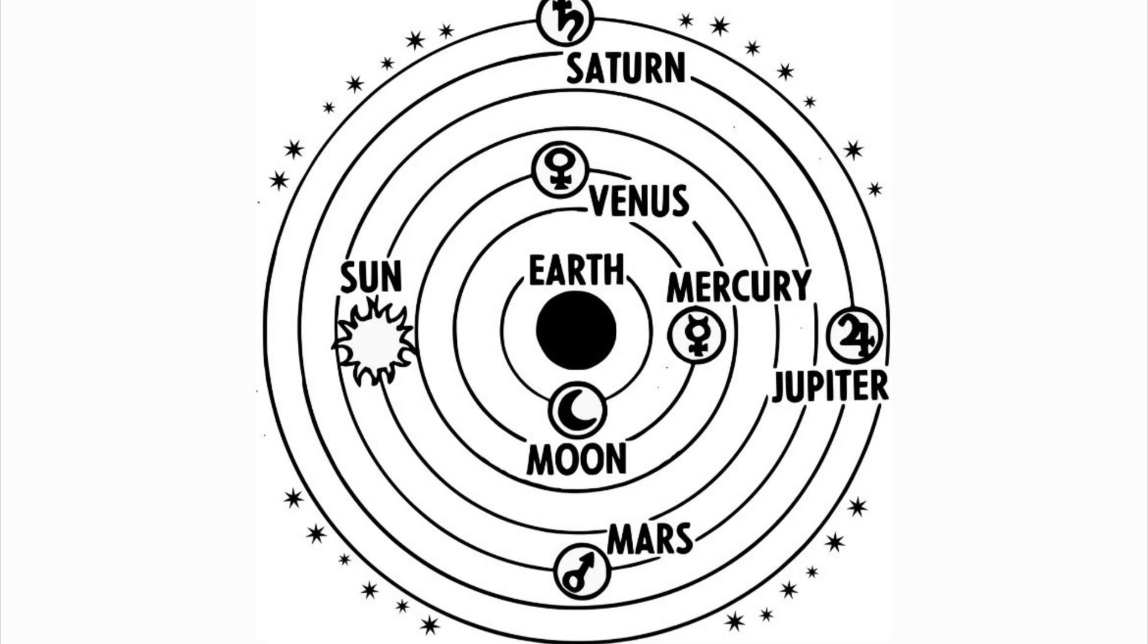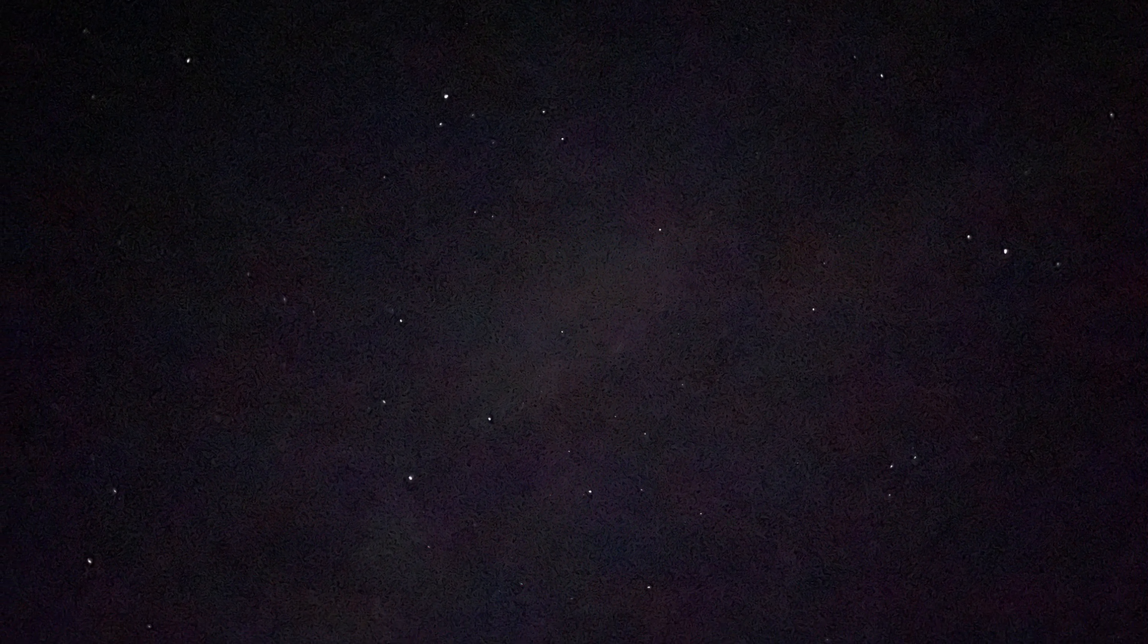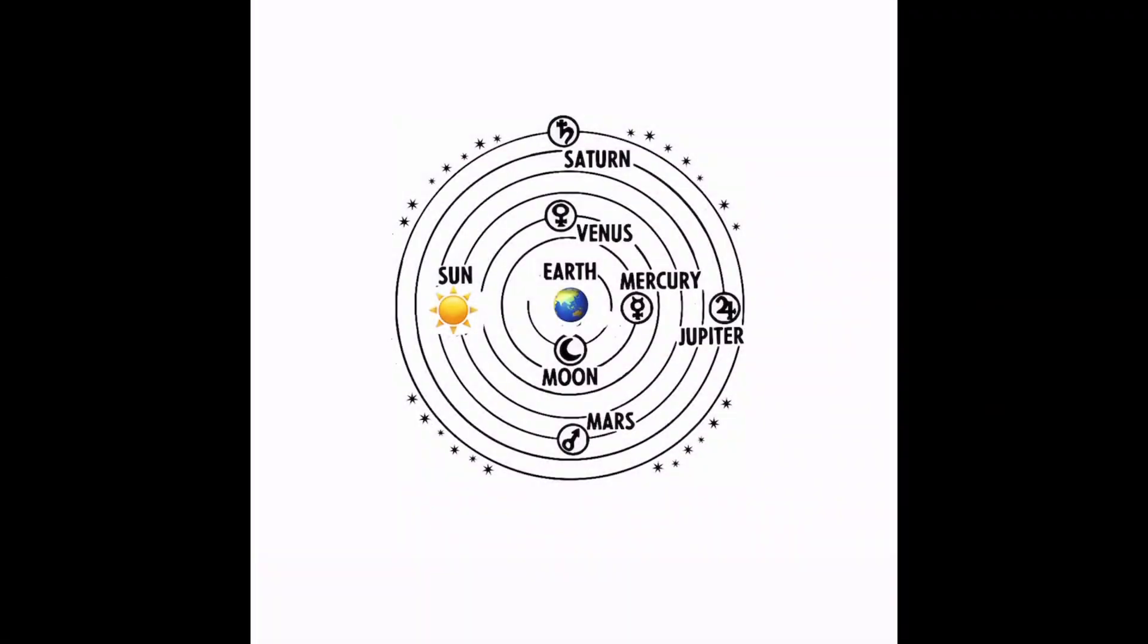In the 1500s, Copernicus realizes that if you place the Earth at the center of the universe, many of the movements of the planets and the stars in the skies don't make any sense at all. So he decides to switch the position of the Earth with the Sun. And then, everything begins working out.